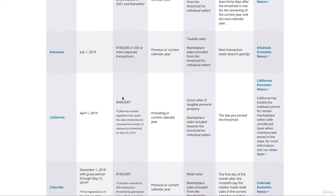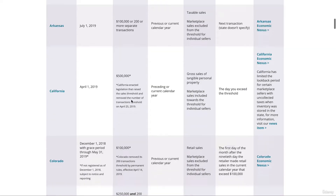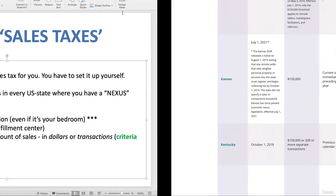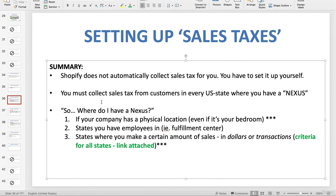Some states like California don't even have a transaction threshold — they only have a revenue threshold. In California, you meet the threshold for a nexus when you make $500,000 in sales to California customers. Just keep looking through all the states in that linked guide.